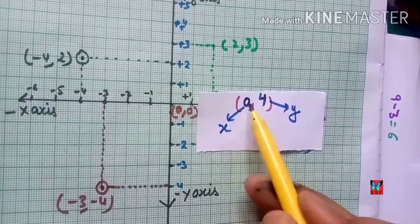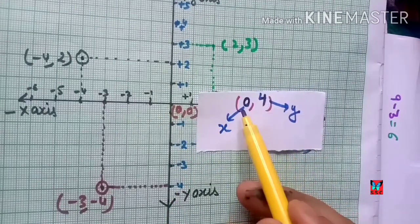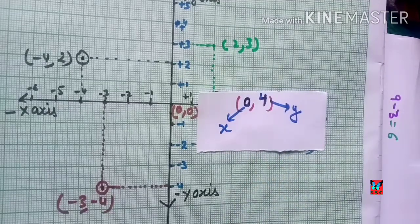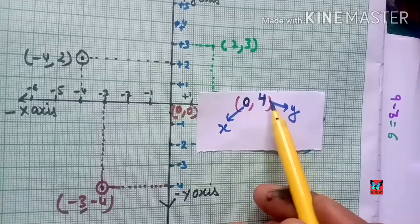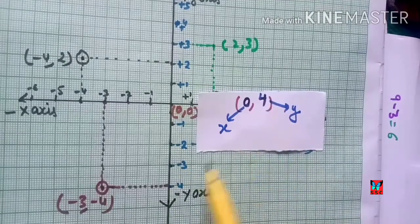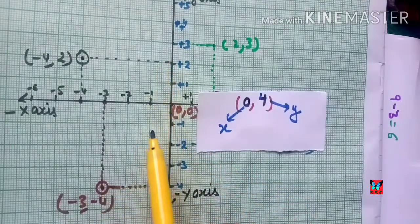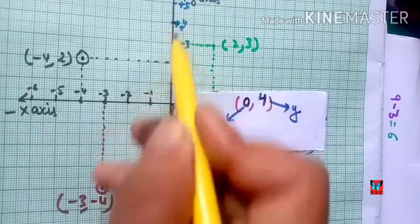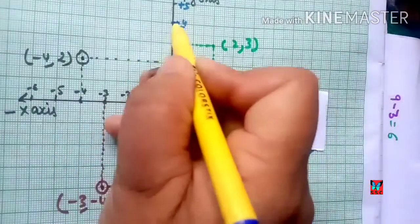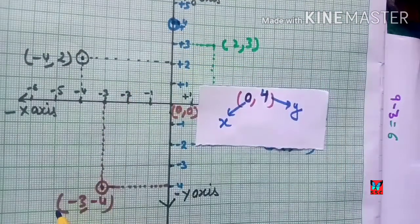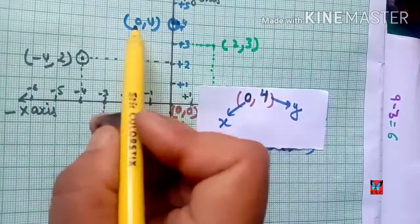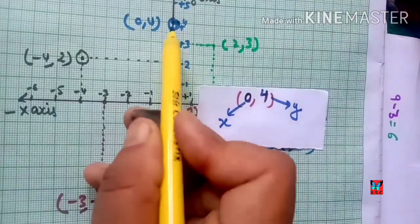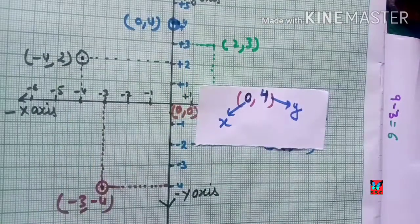Now I will plot the point (0, 4). The abscissa is 0 and ordinate is 4. Since x = 0, there is no distance along the x-axis; the point lies on the y-axis. Going upward on the positive y-axis to +4, this point (0, 4) lies directly on the y-axis.